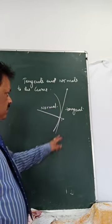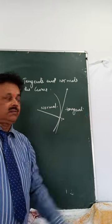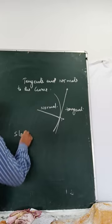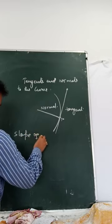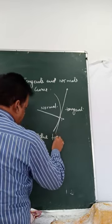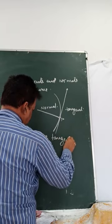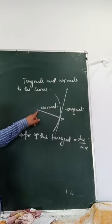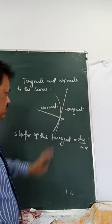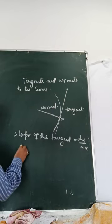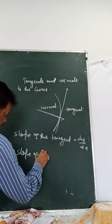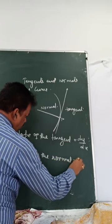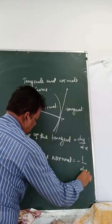In the derivative part, we have already learned that the slope of the tangent is dy by dx. Since the normal and tangent are perpendicular to each other, the slope of the normal will be minus 1 by dy by dx.